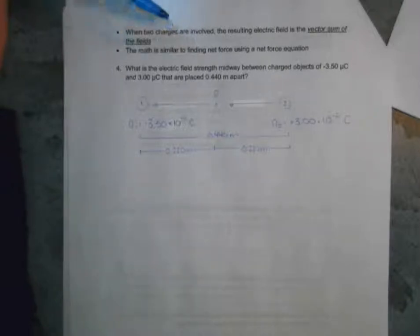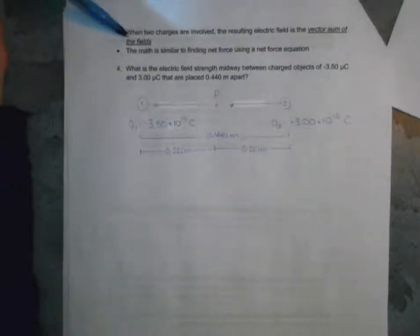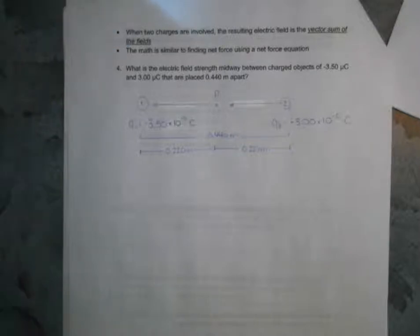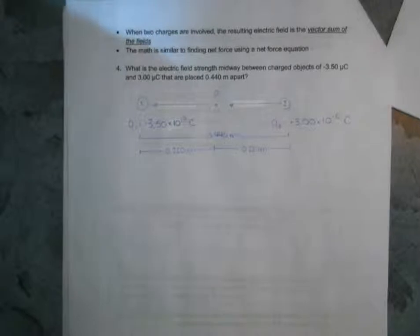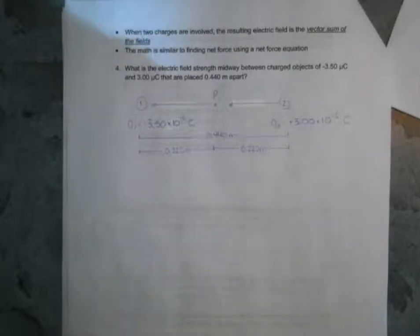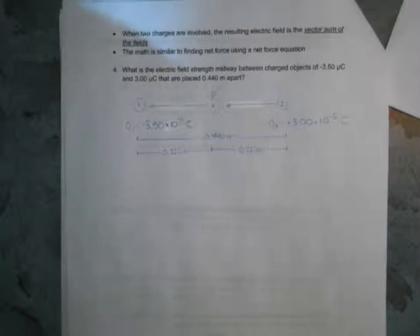Now we look at vector sums of electric fields. If you have two charges involved, the resulting electric field is a vector sum — very similar to finding net force. You find the different field components, add them based on direction, and if you have x and y components you find the x total and y total and then find the resultant.